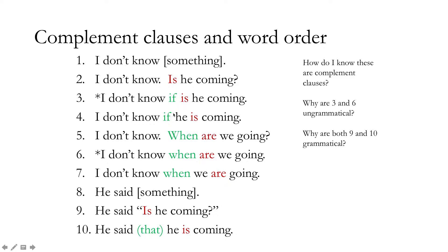'I don't know. When are we going?' Again, 'when' and 'are' are both competing for the complementizer spot. 'Are' can't move to that spot because 'when' is already there. So we have to say 'I don't know when we are going' — not 'I don't know when are we going.' These are mistakes learners make when they don't internalize that 'if' and 'when' are complementizers and 'is' and 'are' are also complementizers — they'd be competing for the same spot and can't both be there.